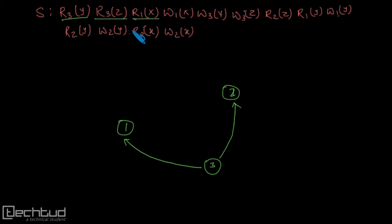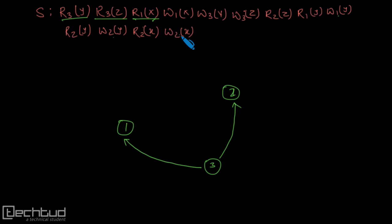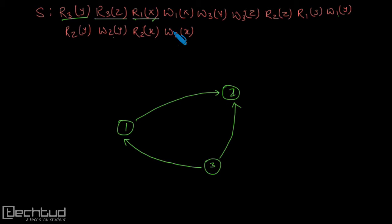Now r1x. When we go for r1x, for x we have r2x and w2x. This operation is conflicting with w2x — same variable, different transaction, and one is a write operation. So from 1 to 2 we will draw one edge.